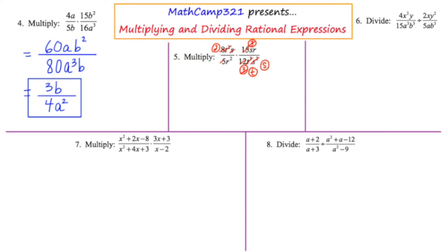Moving to the top right, there's an s that's going to cancel with the s I just circled — so that goes away completely. And the r on the top right and the r squared on the bottom left cancel, leaving me with an r on the bottom. Cross-canceling is fun, but if you're not neat about it, it's just going to look like a big mess on your page.